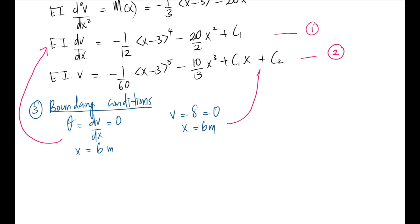The boundary condition for slope: dv/dx equal to 0 when x equal to 6 meters. For deflection, v equal to 0 when x equal to 6 meters. We can substitute into equation 1 and equation 2. I start with equation 1: negative 1/12 (6 minus 3)⁴ minus 10(6)² plus C1, so C1 is equal to 1467 divided by 4.